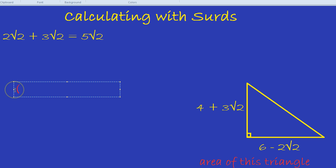So in this case, we've got 6 minus 2 root 2 multiplied by 4 plus 3 root 2. So to represent that multiplied by, I'm just going to put it in brackets. Let's do this calculation. And we just need to remember to divide by 2 at the end.